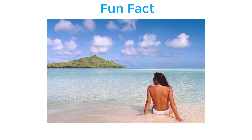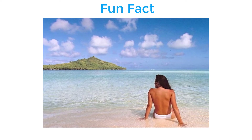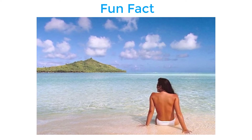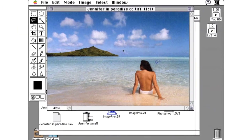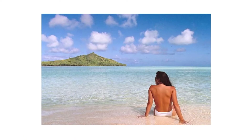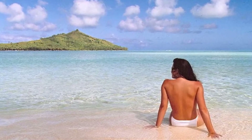Fun fact: the first photoshopped image was of John's wife on the beach, taken from a trip to the Hawaiian Islands. John named the image file 'Jennifer in Paradise.' So Jennifer in Paradise became the first color image used to demonstrate the software they had started to call Photoshop, and you can also say this was the first tutorial on Photoshop. Interesting, isn't it?